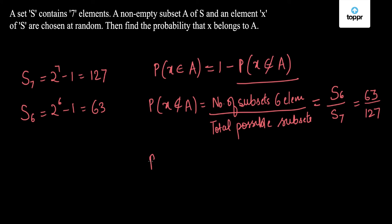So our probability that X will belong to A will be 1 minus this number which is equal to 64 by 127. So this is the solution to our problem.